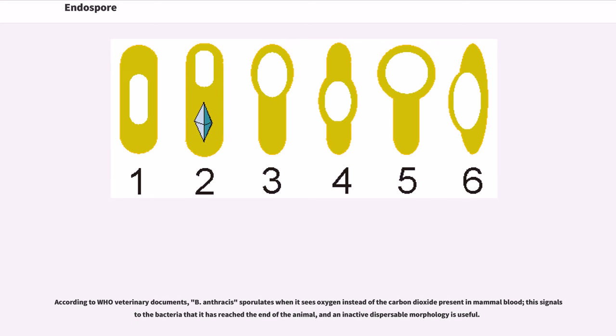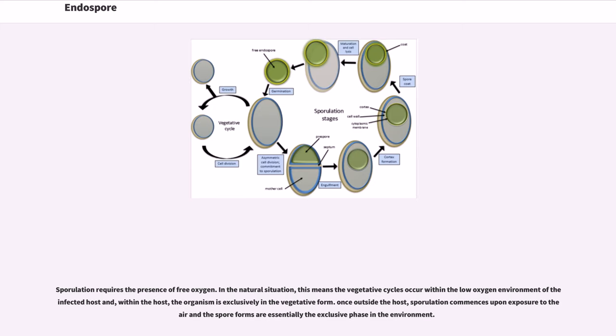According to WHO veterinary documents, B. anthracis sporulates when it sees oxygen instead of the carbon dioxide present in mammal blood. This signals to the bacteria that it has reached the end of the animal, and an inactive dispersible morphology is useful. Sporulation requires the presence of free oxygen. In the natural situation, this means the vegetative cycles occur within the low-oxygen environment of the infected host and, within the host, the organism is exclusively in the vegetative form. Once outside the host, sporulation commences upon exposure to air and the spore forms are essentially the exclusive phase in the environment.